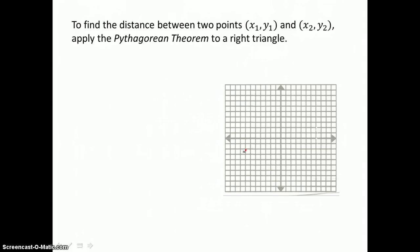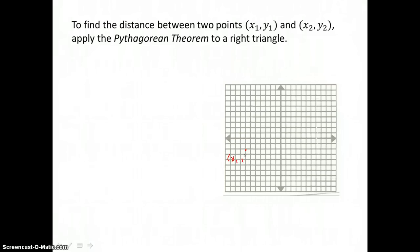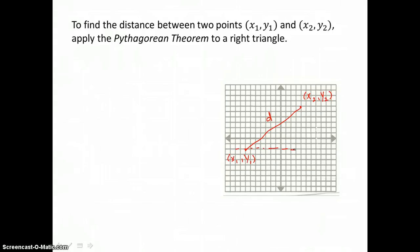On the coordinate plane, we can graph any two points, x sub 1, y sub 1, and x sub 2, y sub 2. We want the distance between those two points, so we'll label that distance D. To find it, we create a right triangle by drawing a horizontal line through one of the points and a vertical line through the other. The ordered pair that names the vertex of this right triangle at the right angle would be x sub 2, y sub 1.